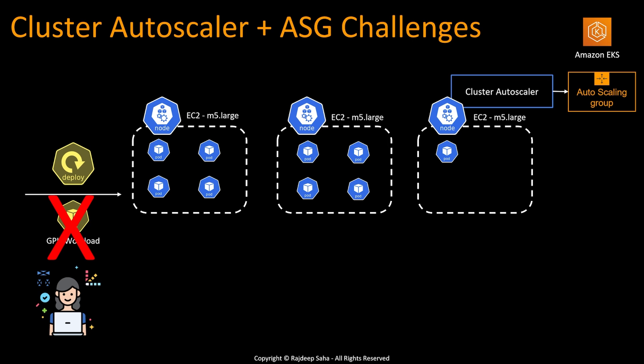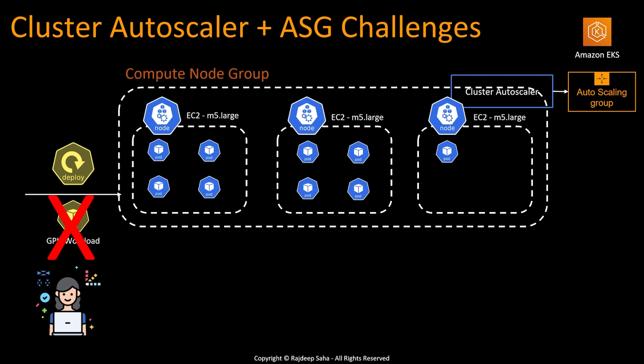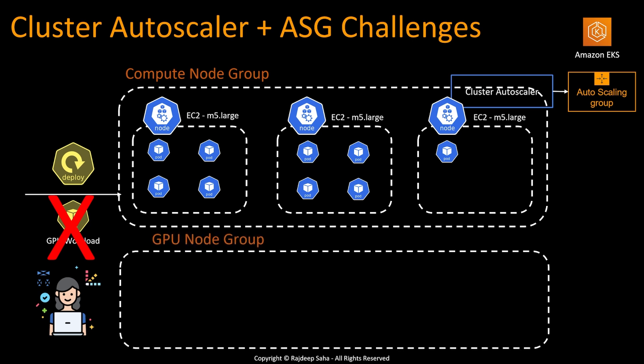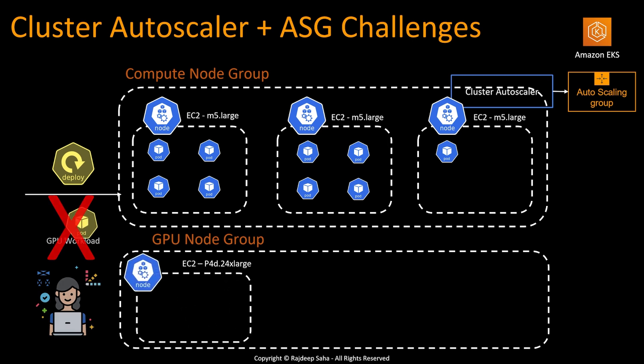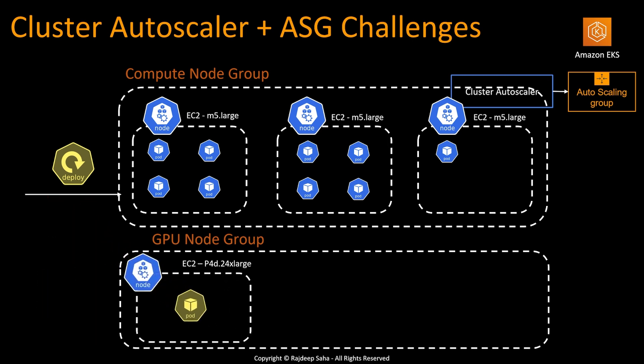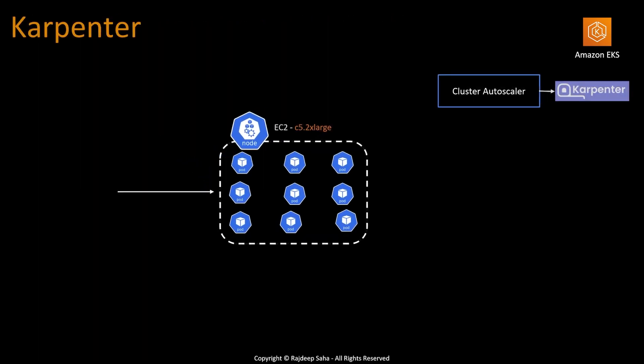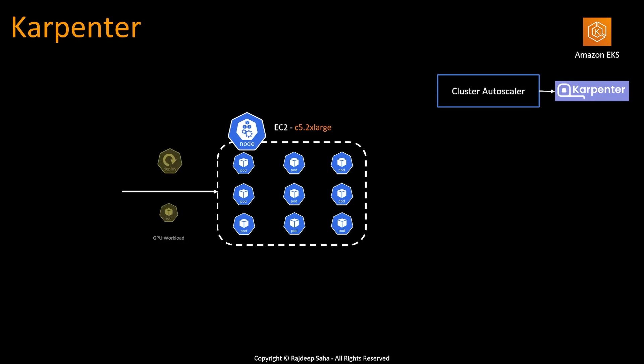So how do you solve this today? The admin needs to get involved and create different node groups. She will create a node group for compute nodes — all those existing running EC2s will be under that compute node group — and then she will create a GPU node group, where GPU instances can be spun up. Then a GPU instance will spin up and your GPU workload will get scheduled.